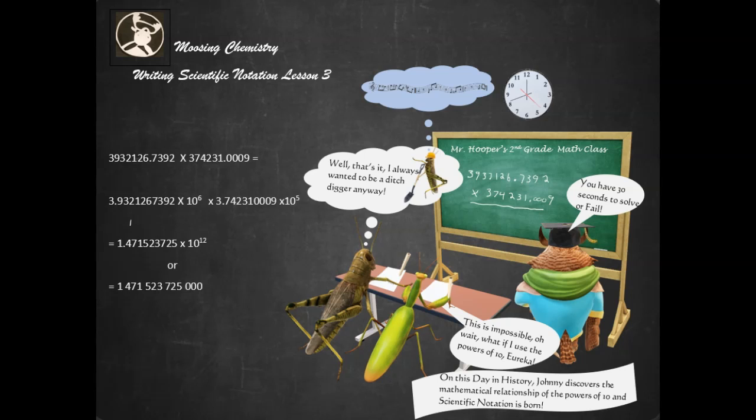For example, if you have the number 3932126.7392 times 374231.009, trying to multiply that on a piece of paper is a nightmare because you have to carry from each column to each column and make sure that you have all your sub columns and sub numbers all added up. It's just a big mess.